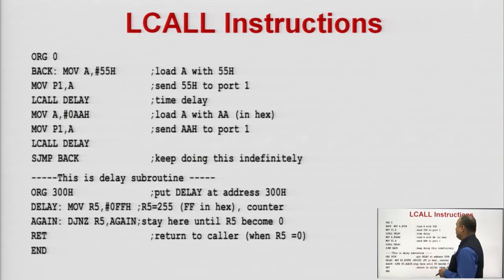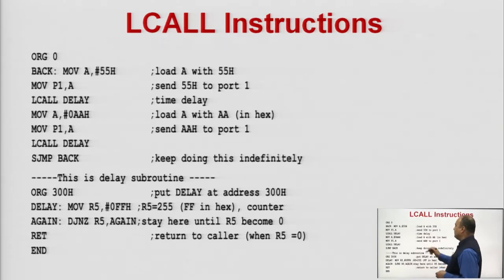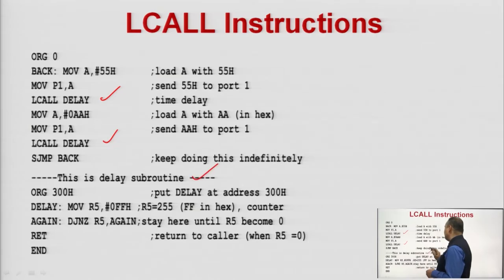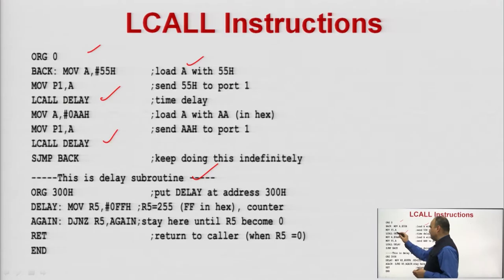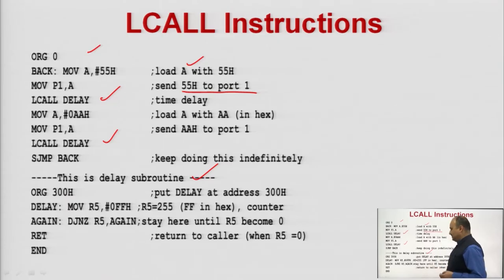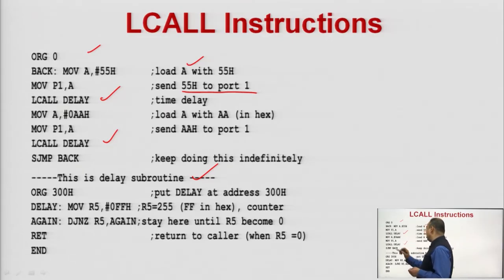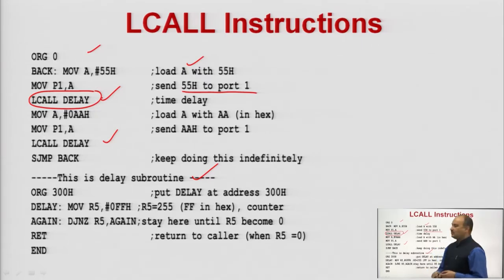Here is an example of the LCALL instruction using a delay subroutine. In the main program, the first instruction MOV A, #55H loads the accumulator with 55H, then MOV P1, A sends 55H to port P1. Then we use the LCALL DELAY instruction to call the delay subroutine, which generates a certain amount of delay. Then the second value 0AAH is copied into the accumulator and again transferred to port P1, then we call the delay subroutine again.